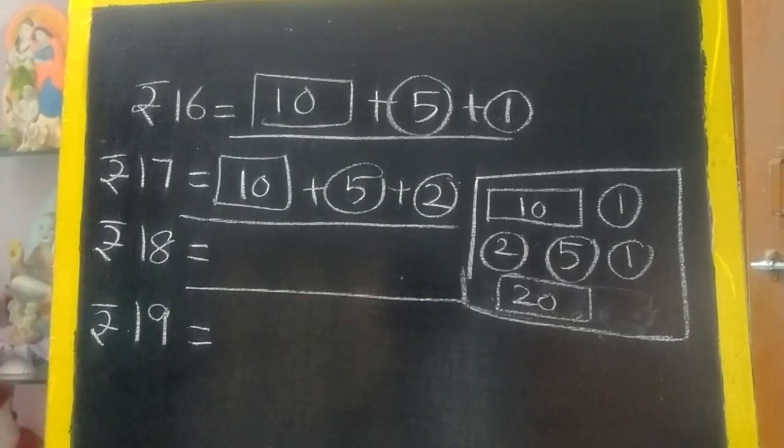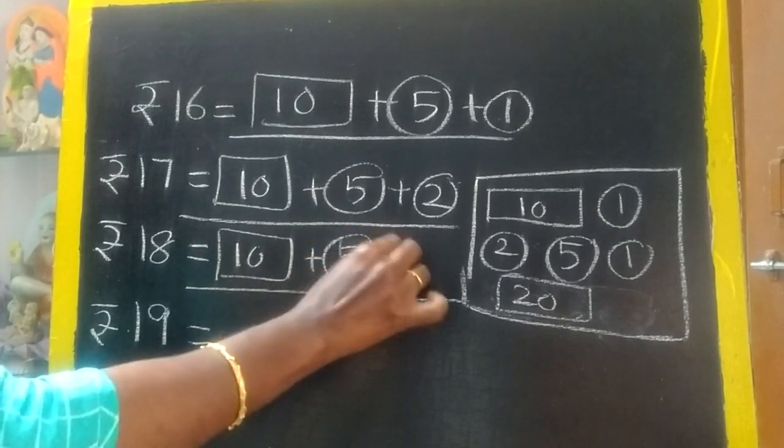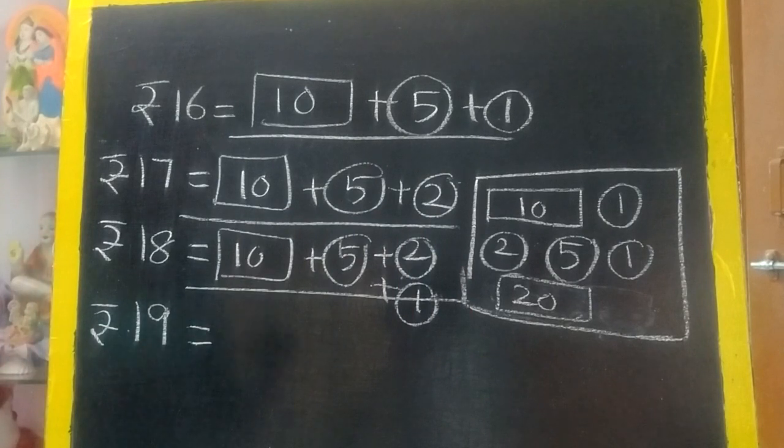Next is 18. You know 8, right? How will you split 8? 5 plus 2 plus 1. Here 10 plus 8. But there is no 8 rupee. 10 plus 5 plus 2 plus 1. Parents, you can give the real coin and money and ask them to give some amount. Then practically they will learn.